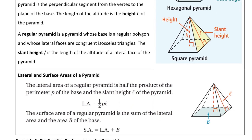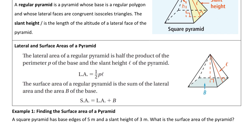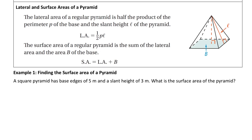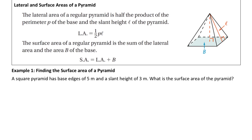A regular pyramid is a pyramid whose base is a regular polygon and whose lateral faces are congruent isosceles triangles. The new vocabulary term to remember is slant height — that is the length of the altitude of the lateral face of a pyramid, or the height of the triangular faces. We need slant height to find surface area and lateral area. The lateral area of a regular pyramid is one half the product of the perimeter of the base and the slant height.